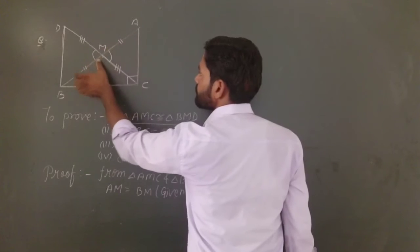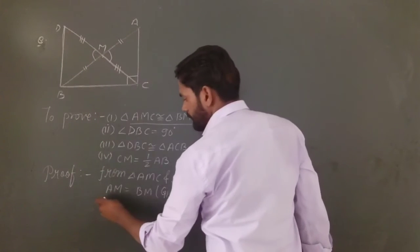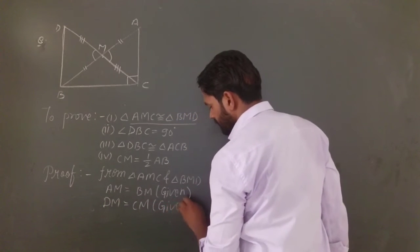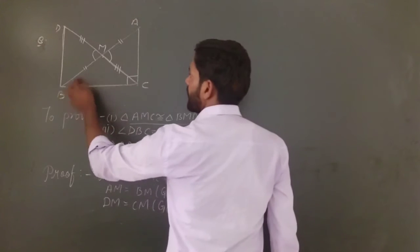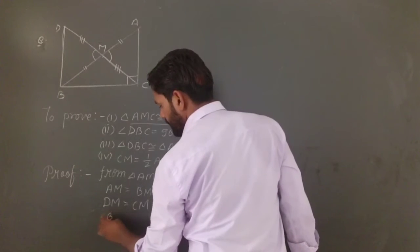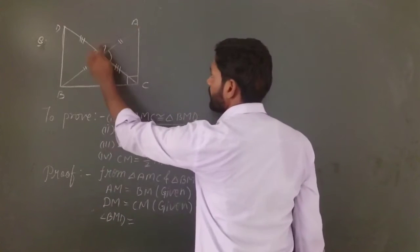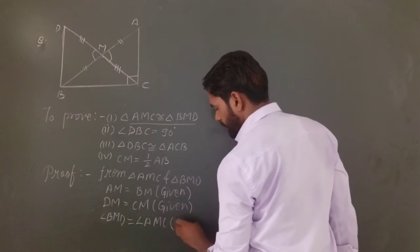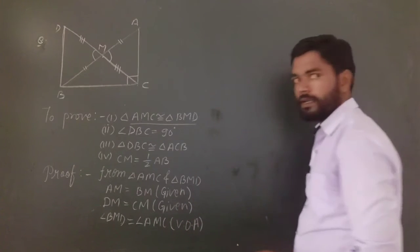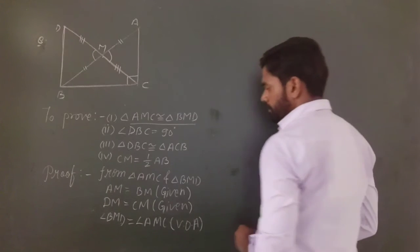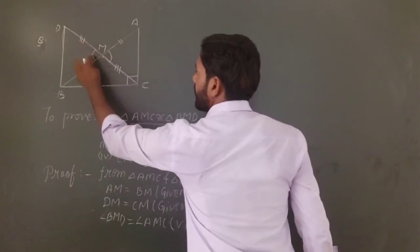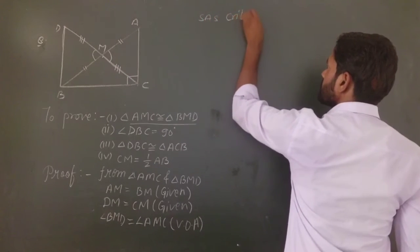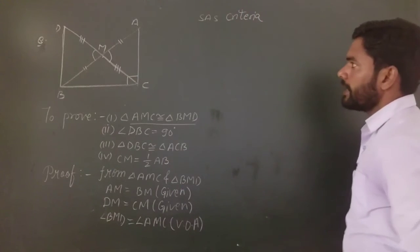First, AM is equal to BM — this is given. Second, DM is equal to CM — this is also given. Third, angle BMD is equal to angle AMC — reason: vertically opposite angles. So using SAS (side-angle-side) criteria: